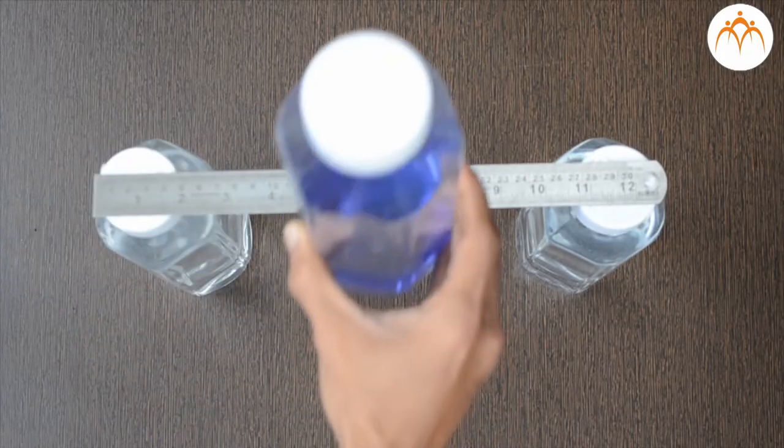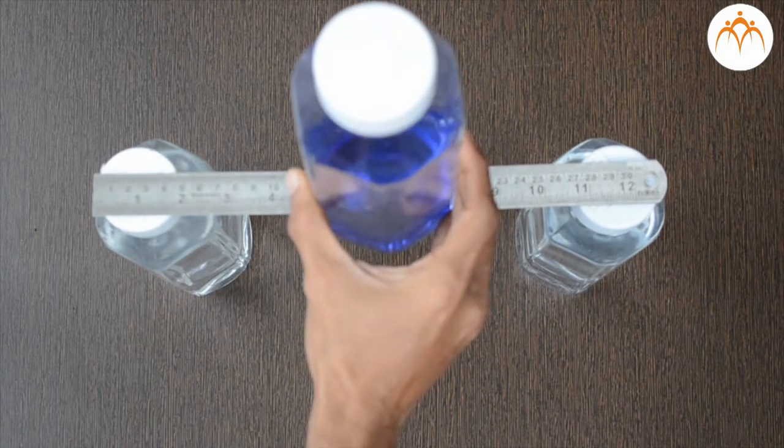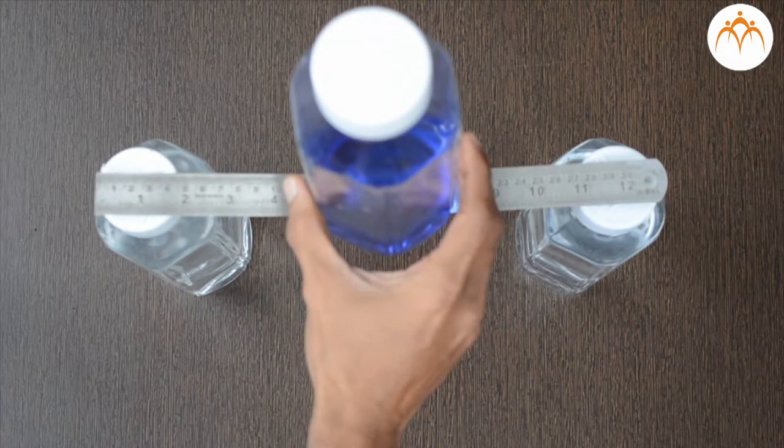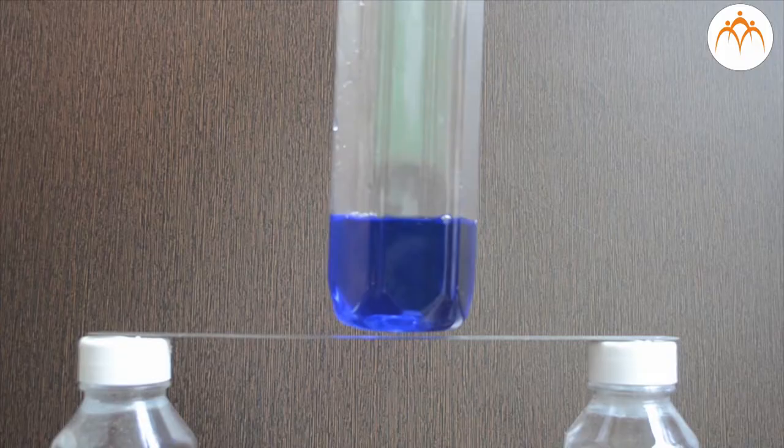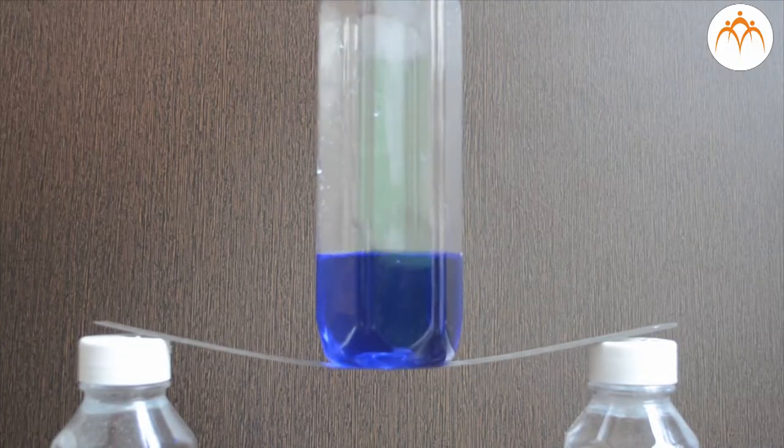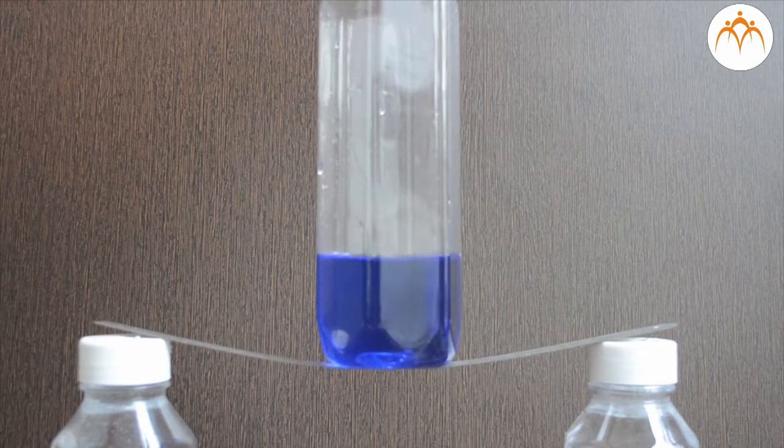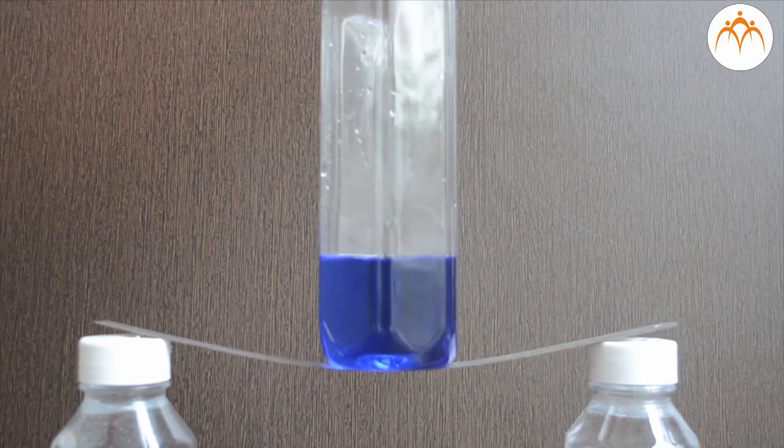Now let me change the position of the block and keep it vertically. Will the ruler bend the same amount? Let us give it a try. This time the ruler bends more. What could be the reason for this? It is the same block after all.